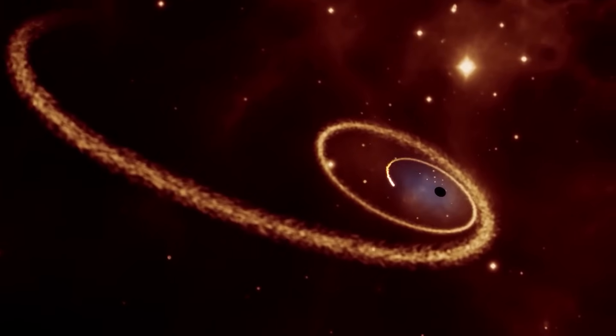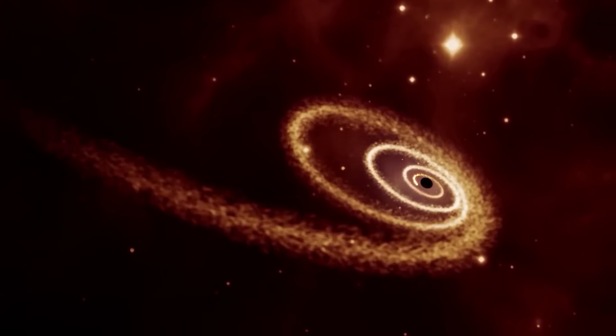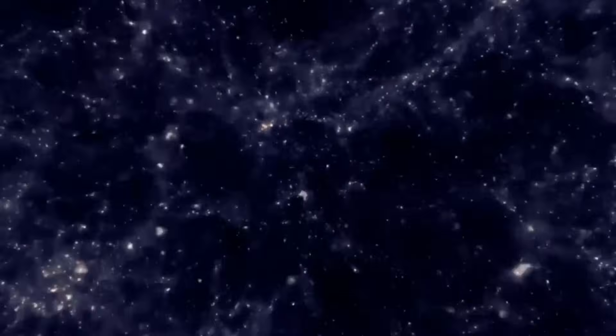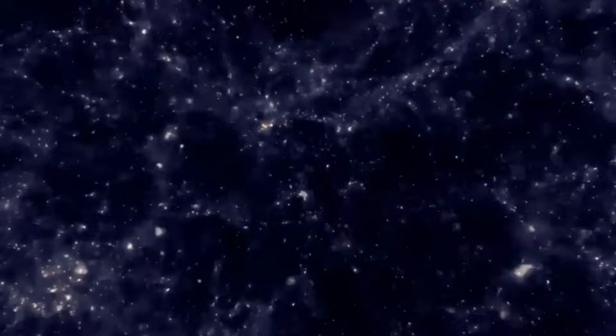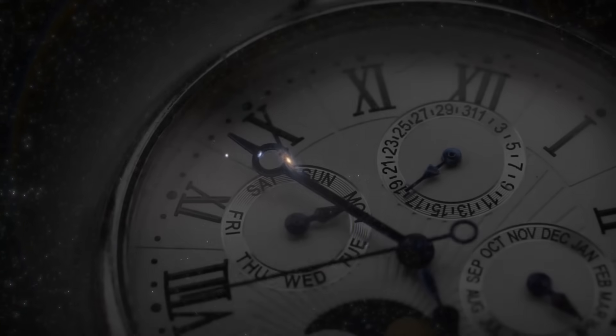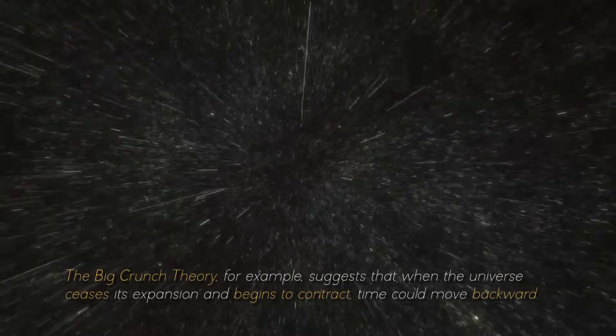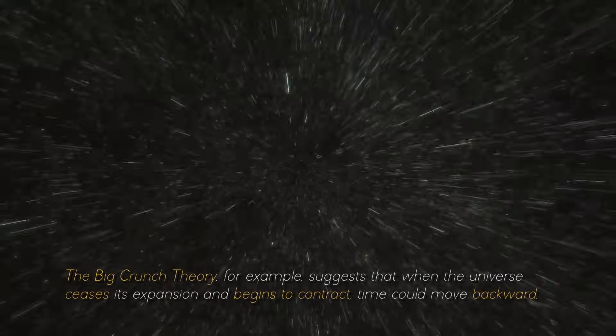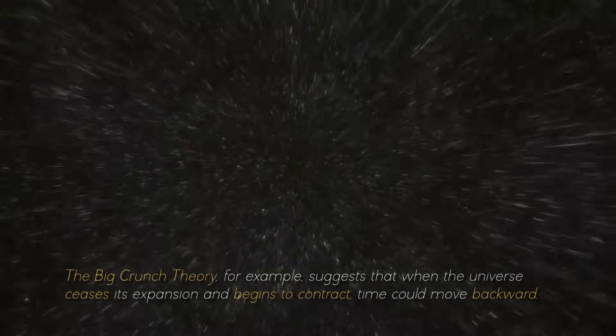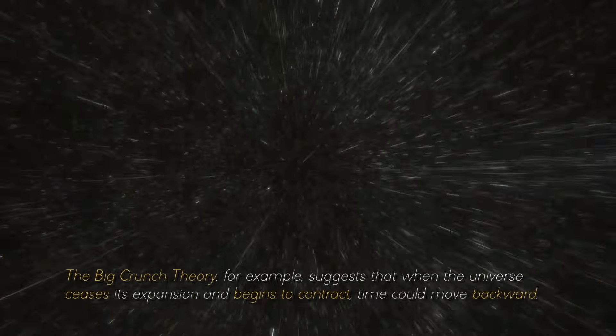If we delve deeper into this idea, we tend to think of time as something that flows invariably forward. However, here is the intriguing thing: the laws of physics do not require that time works differently if it moves forward or backward. The Big Crunch theory, for example, suggests that when the universe ceases its expansion and begins to contract, time could move backward.